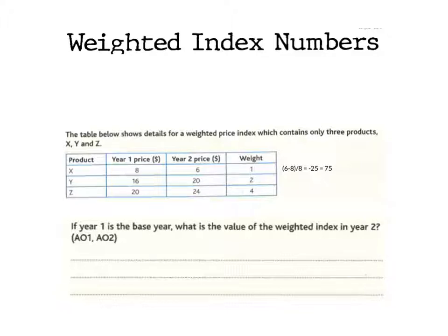Now what we do to work out the weight of it, we'd simply do 75 times by one which would give us 75. So the weighted index of product X would be 75.